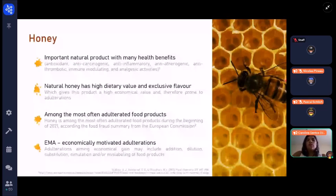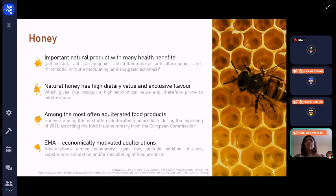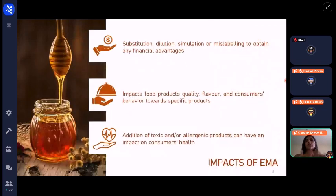In the food fraud summary from the European Commission, honey is systematically among the most often adulterated food products, usually for economical reasons, what we call economically motivated adulterations, the EMA. This type of adulteration usually includes the substitution, dilution, simulation, or even mislabeling of food products to obtain any kind of financial advantages.